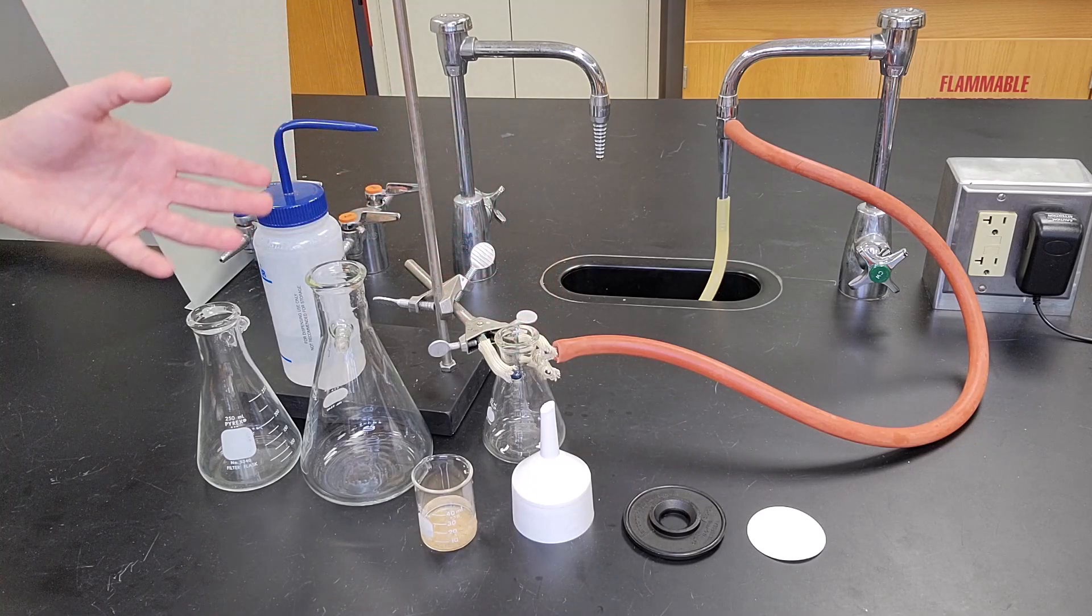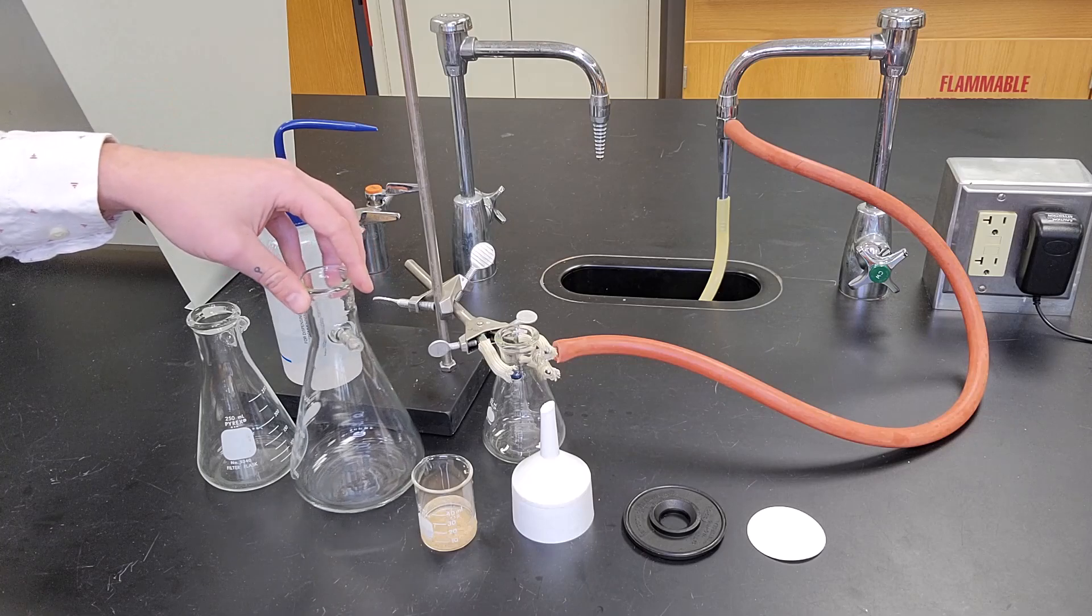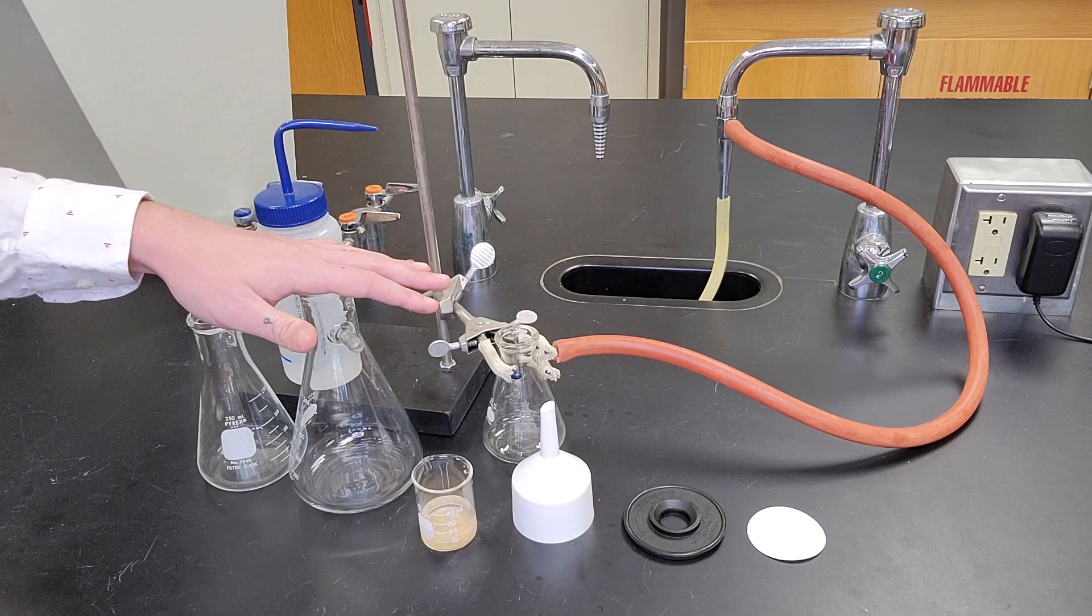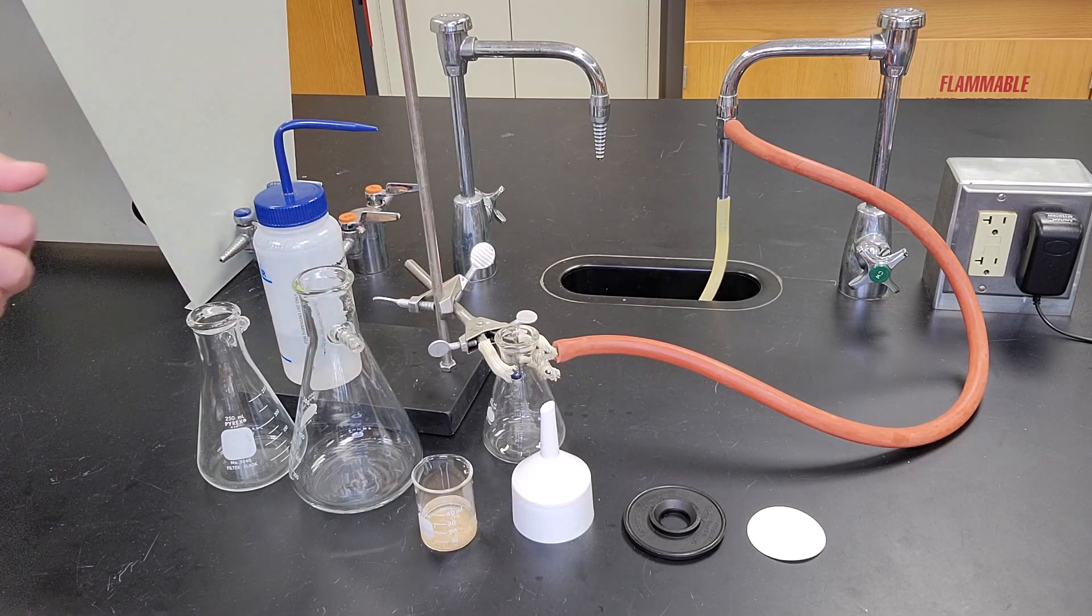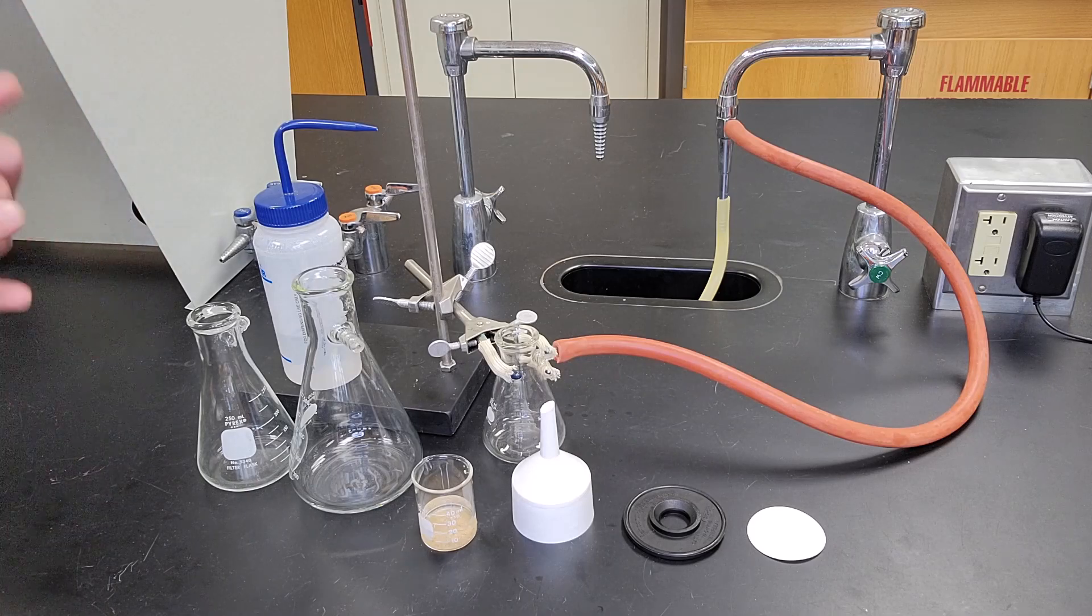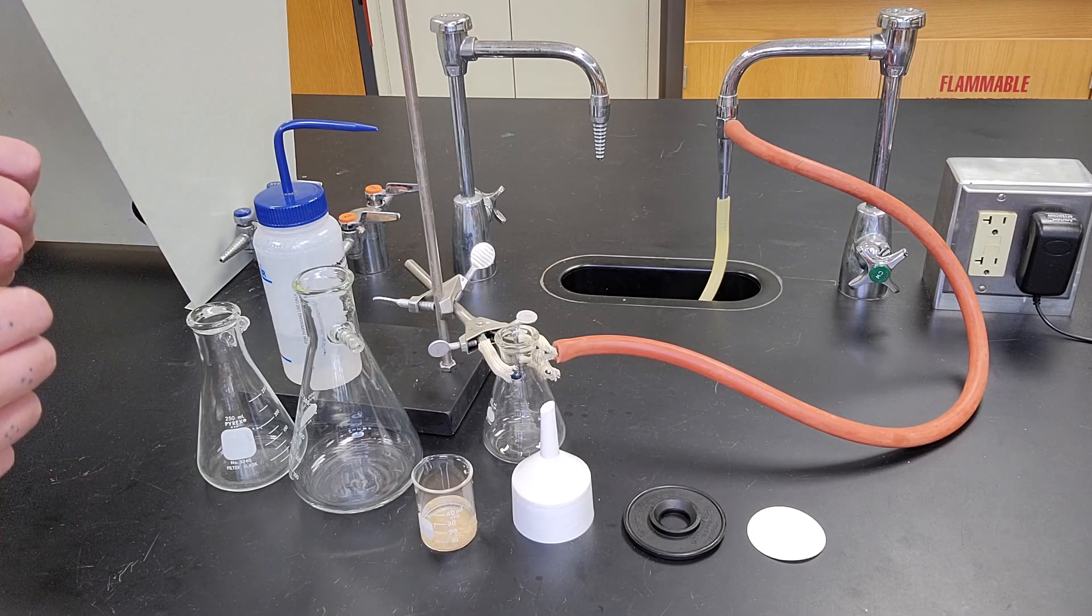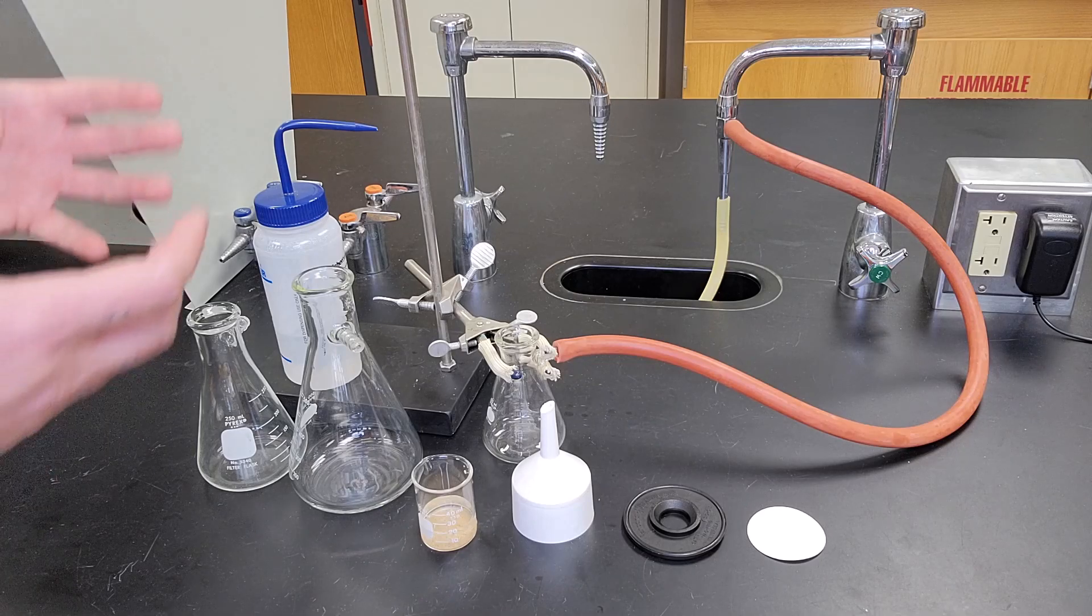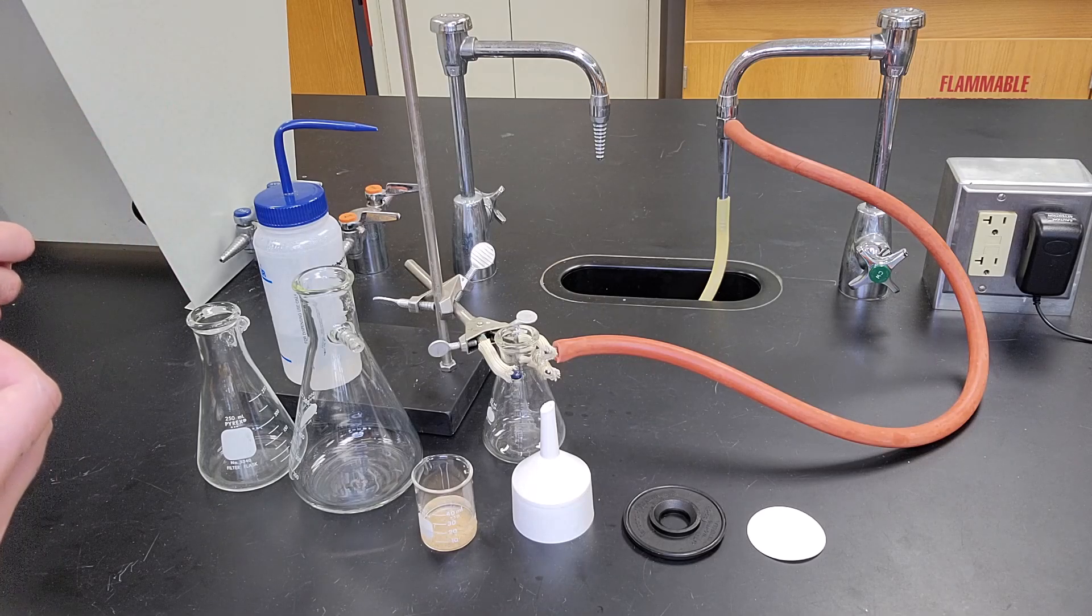If you're expecting 500 mils of fluid to come through your filter, you might want to choose the larger one. Depending on the volume of liquid flowing through, both in your original solution and in your washes, you want to choose the correct size accordingly.